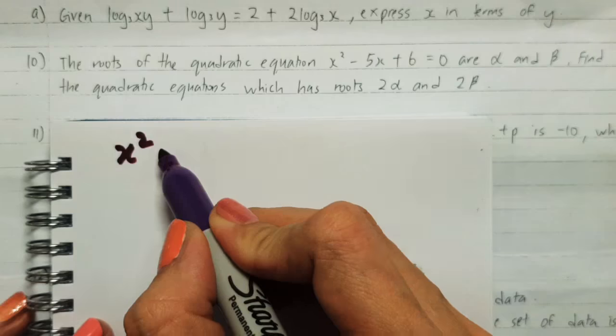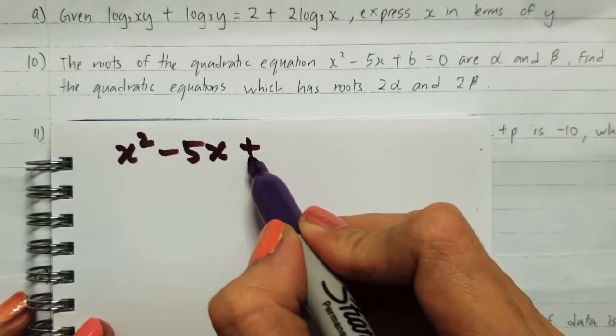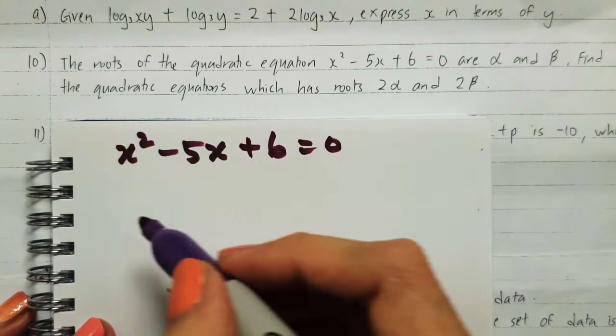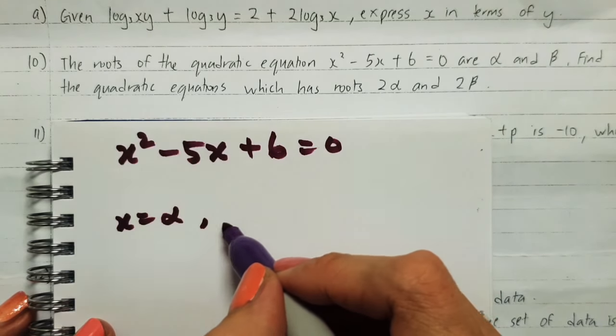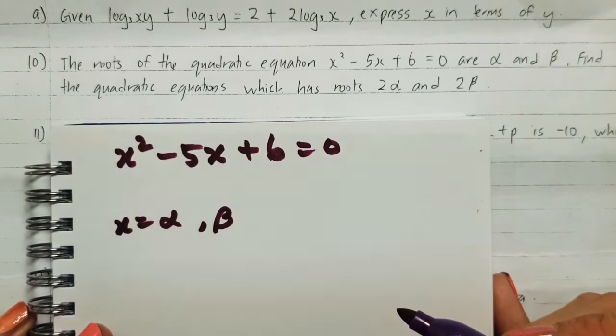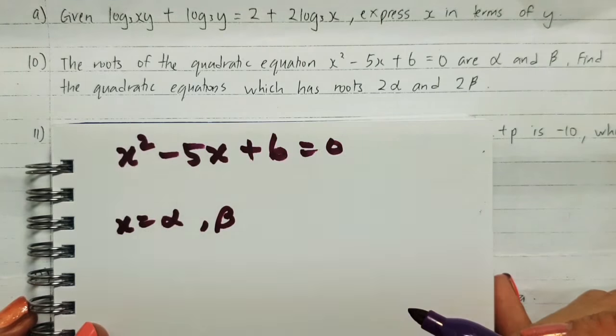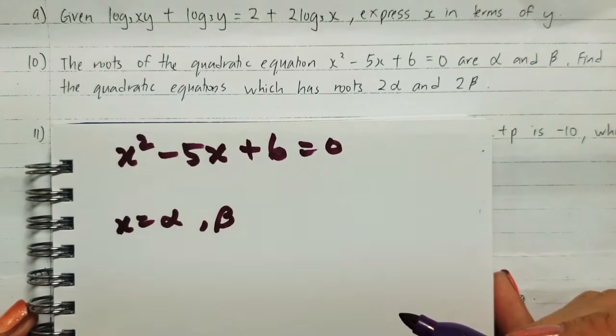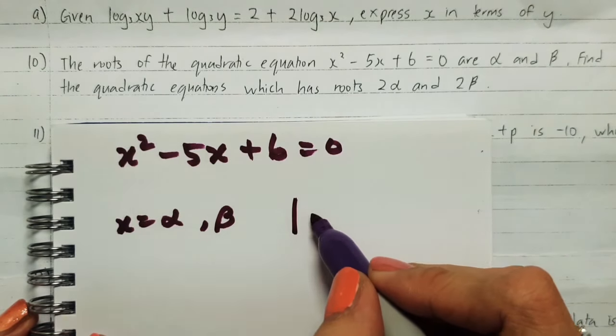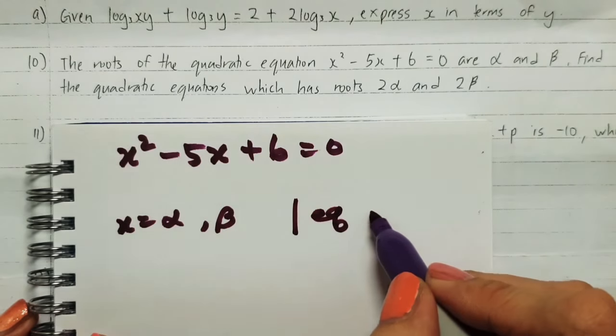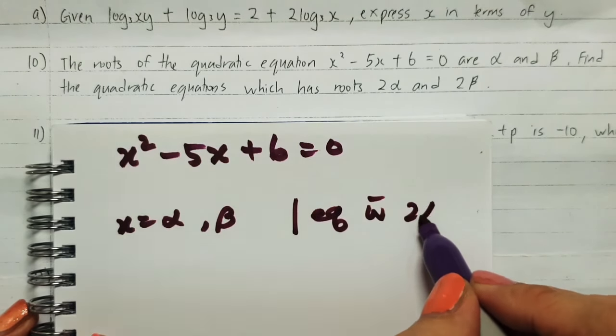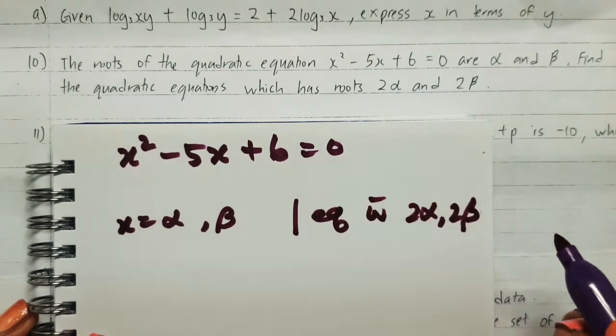We have x² - 5x + 6 = 0, where the roots are alpha and beta. We need to find the quadratic equation which has the roots 2α and 2β.